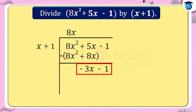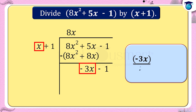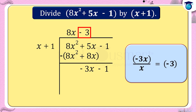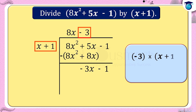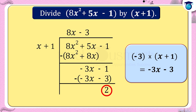The next dividend is -3x - 1. Divide the first term -3x by the first term of the divisor x. That is -3x ÷ x = -3, which is the next term of the quotient. Multiply -3 by each term of the divisor x + 1: -3 × (x + 1) = -3x - 3. Subtract this product -3x - 3 from the dividend -3x - 1. We get the remainder as 2, which is not equal to 0.